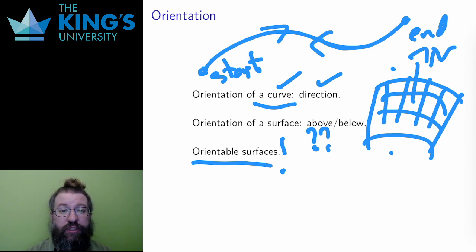All of the examples I've used so far, planes, graphs of scalar fields, surfaces of revolution, spheres, cylinders, cones, all of these are orientable.